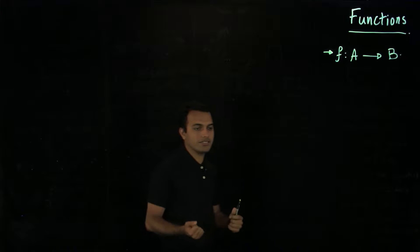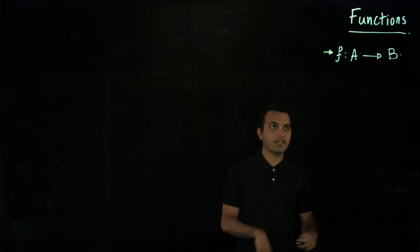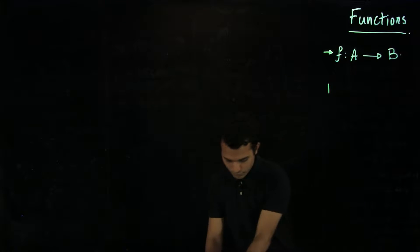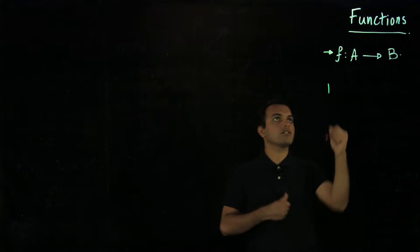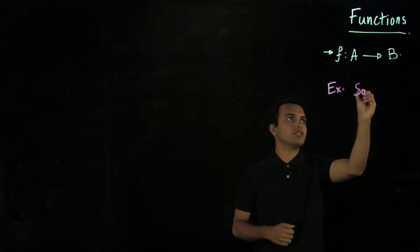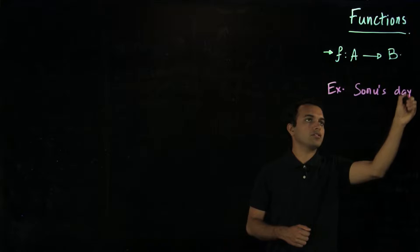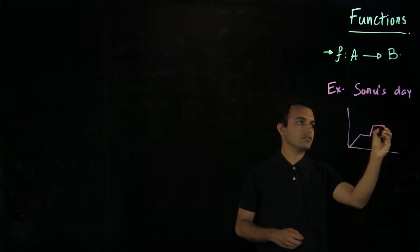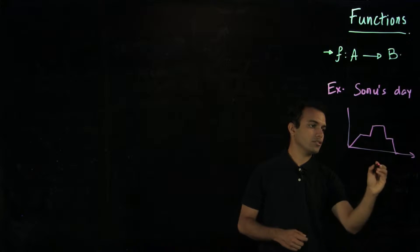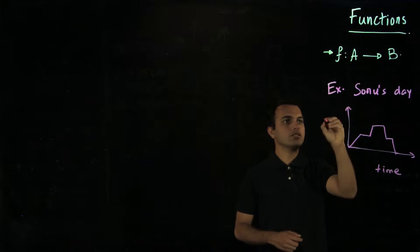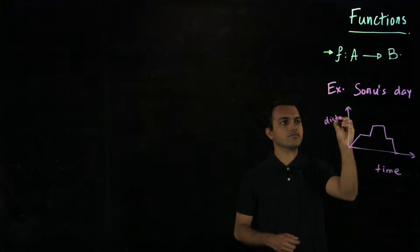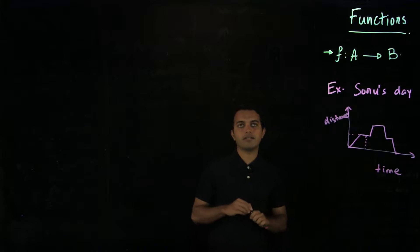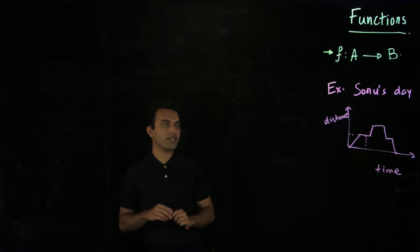So for every element in the input set you don't have two output values, and that is a very intuitive property of functions that is true in a lot of phenomena. For example, in the example we saw last time — Sonu's day — we had distance of Sonu from home on the y-axis and time on the x-axis. At every point there was only one point on the y-axis, and that is something which a function has to satisfy.